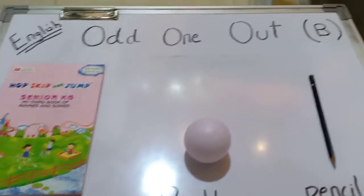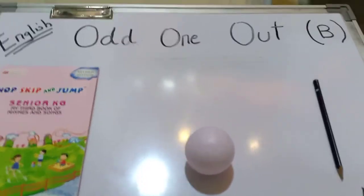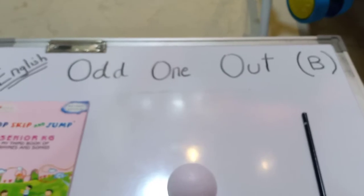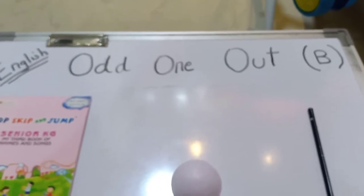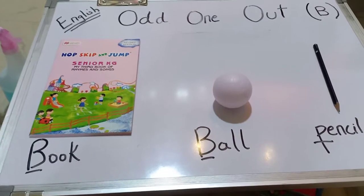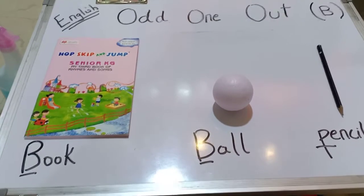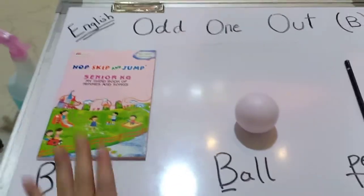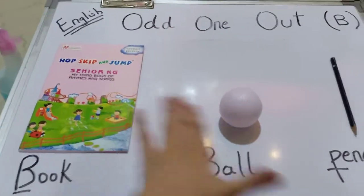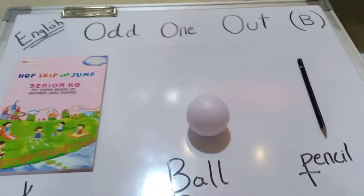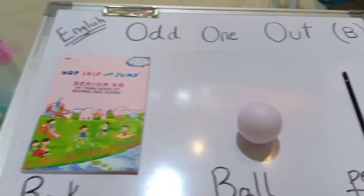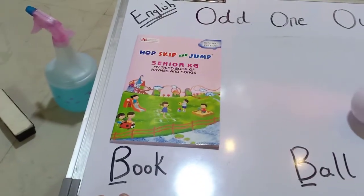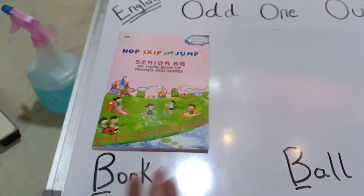Good morning students, today we will do our English subject: odd one out for the letter B. Can you see three objects placed on the table? We have placed three things on the table — that is a book, a ball, and a pencil.